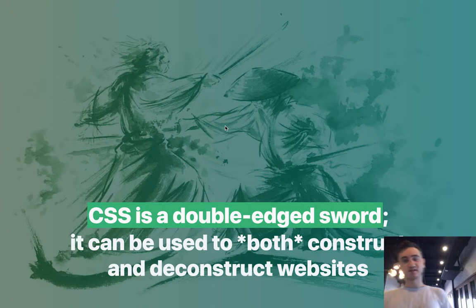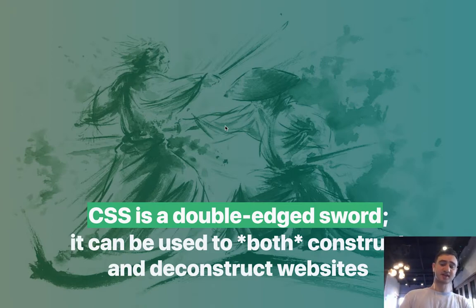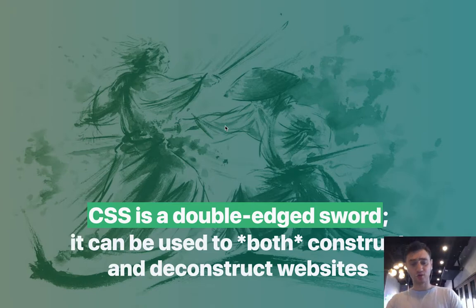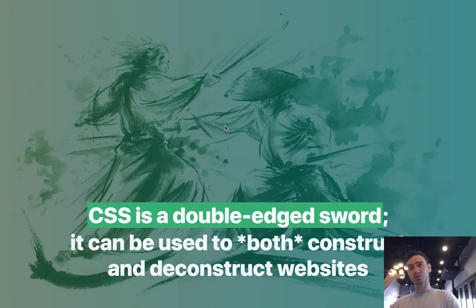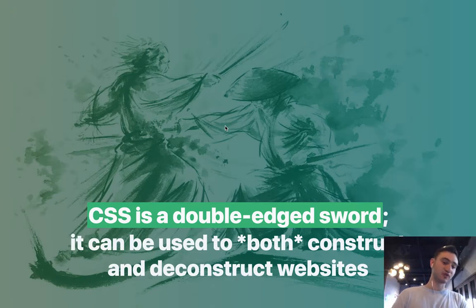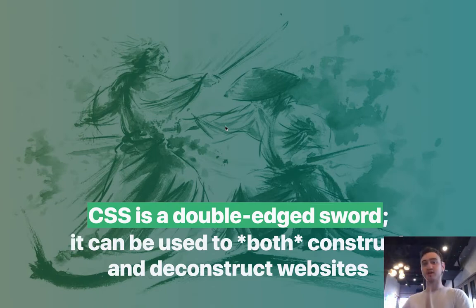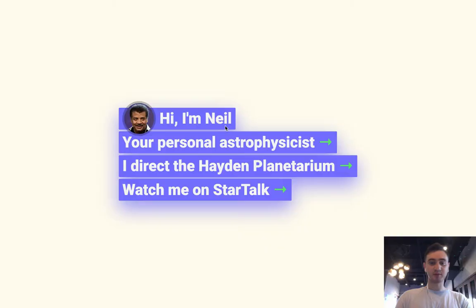So let's go back to the slides. In the article there's a sentence I particularly like: CSS can be thought of as a double-edged sword — it can be used to both construct and deconstruct websites. We get into this mind-numbing experience of thinking CSS is just good for one thing, but really we can use it to not just build things but tear them down too.